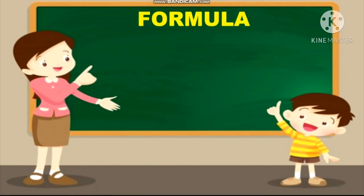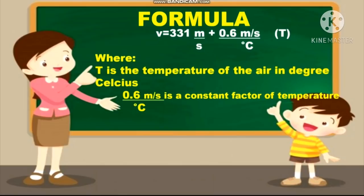So here is the formula we are going to use in computing the speed of sound. V, or the speed of sound, is equal to 331 meters per second plus 0.6 meters per second per degree Celsius multiplied by T, where T is the temperature of the air in degrees Celsius, and 0.6 m/s per degree Celsius is a constant temperature factor.